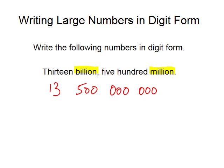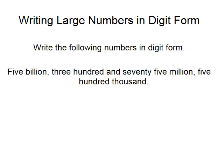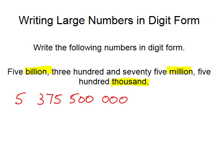Moving on to the next example, we're asked to write 5,375,500,000 in digit form. Our cue words this time are billions, millions, and thousands — leave a space each time. So we have 5 billion, 375 million, leave a space, 500 thousand, leave a space. We need to put in zeros for our hundreds, tens, and units.